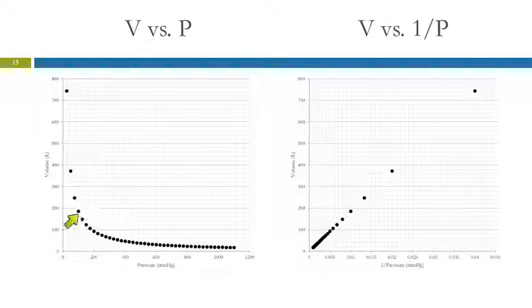So here's some similar data. Volume versus pressure. As the pressure increases, the volume decreases. That's volume versus pressure. If we graph volume versus the reciprocal of pressure, one divided by the pressure, we get a straight line. And that straight line is very useful because now we can predict what's happening in here more accurately.